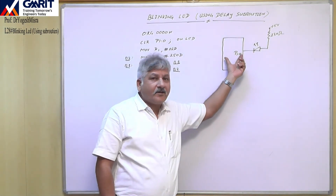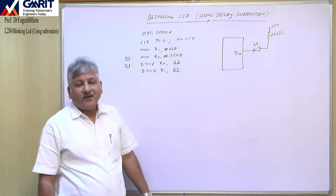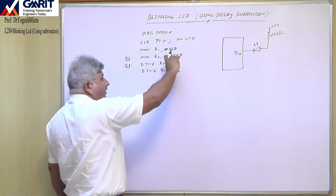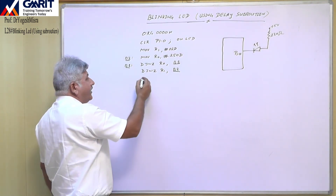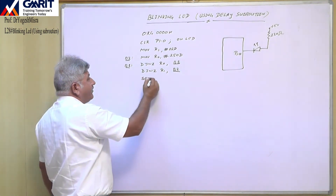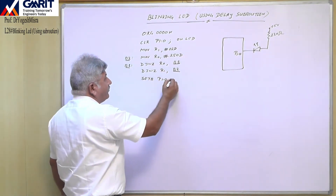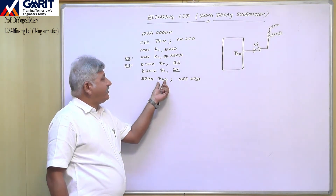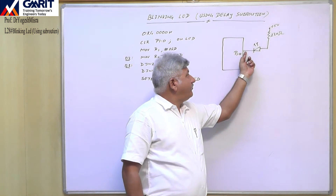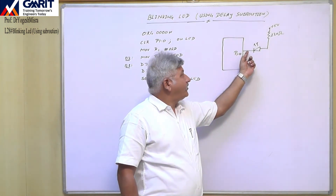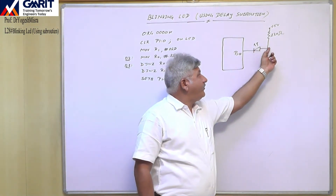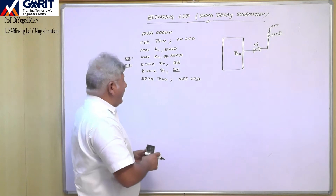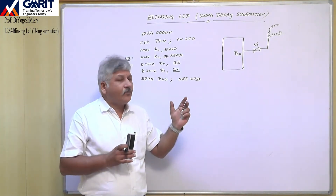This delay works if our controller is running at 12 MHz crystal frequency. Now our LED is on for one millisecond. After that we have to turn the LED off. I will write the instruction SETB P1.0 — this will make the LED off because it sets the pin to 1, which is plus 5 volts. Since both the anode and cathode are at the same potential, the LED will turn off.